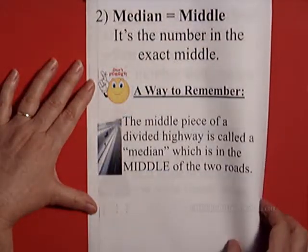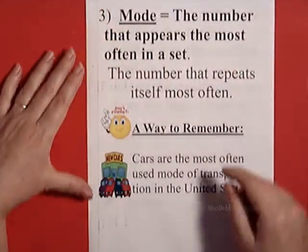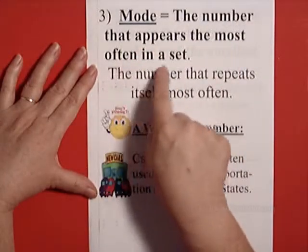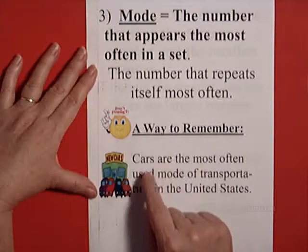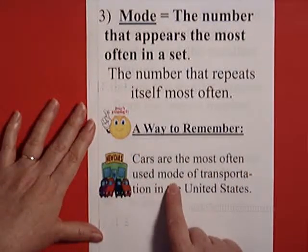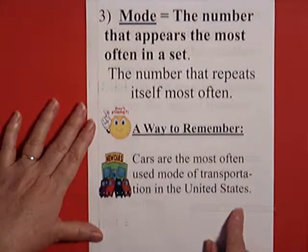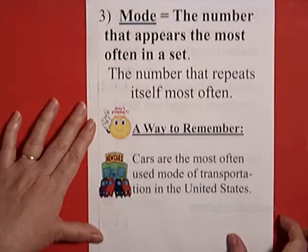Let's go on to number three, which is mode. The number that appears the most often in a set, the number that repeats itself most often. A way to remember is that cars are the most often used mode of transportation in the United States. So mode is the number that appears the most often in a set.